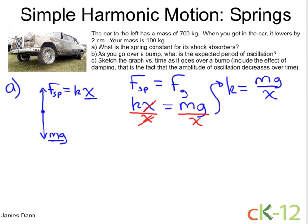Now if we plug in the numbers, your mass is 100 kg times the acceleration of gravity, 10 meters per second squared, all divided by 2 centimeters, which is 0.02 meters.